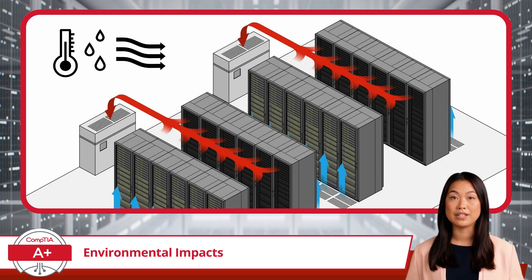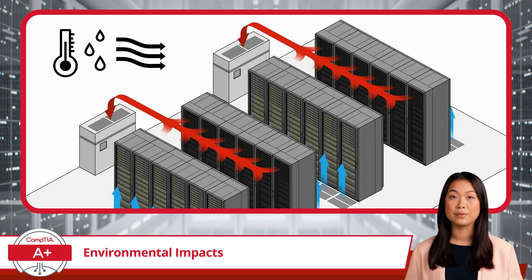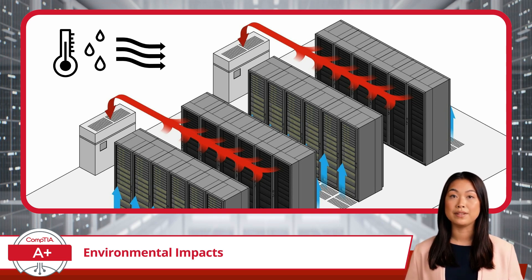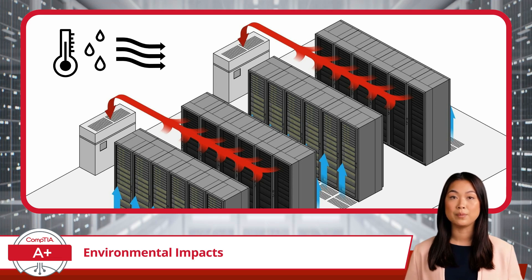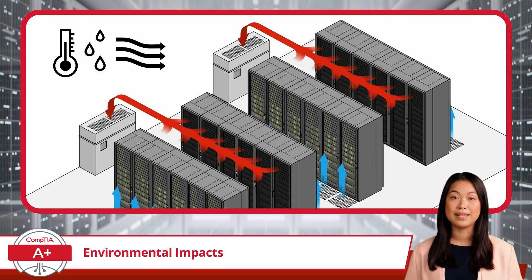Moving on from temperature and humidity, ventilation is equally as important. Cramming devices together or blocking airflow is a surefire way to shorten the lifespan of IT equipment. Make sure your equipment has room to breathe. Alongside proper ventilation is dust — the silent killer. Dust particles might seem trivial, but they clog fans and vents, leading to overheating. A quick blast of compressed air, or a gentle sweep with a vacuum designed specifically for use with electronics, can do wonders for your setup. When you properly control environmental factors such as temperature, humidity, and ventilation, your hardware will thank you with smoother performance and fewer breakdowns.